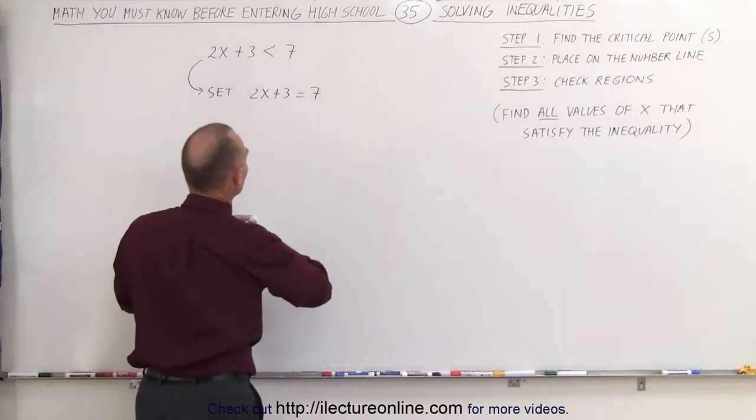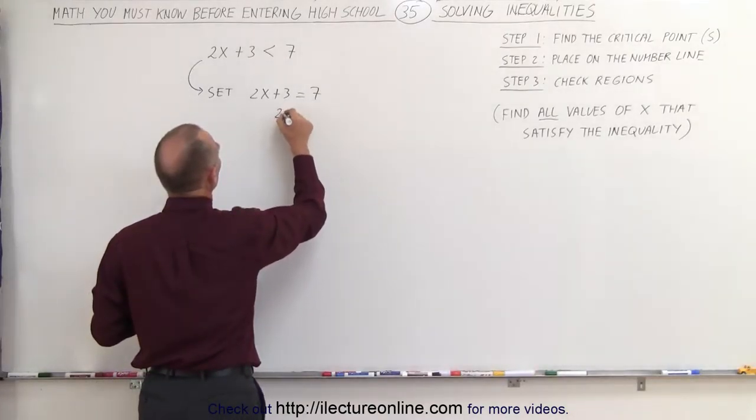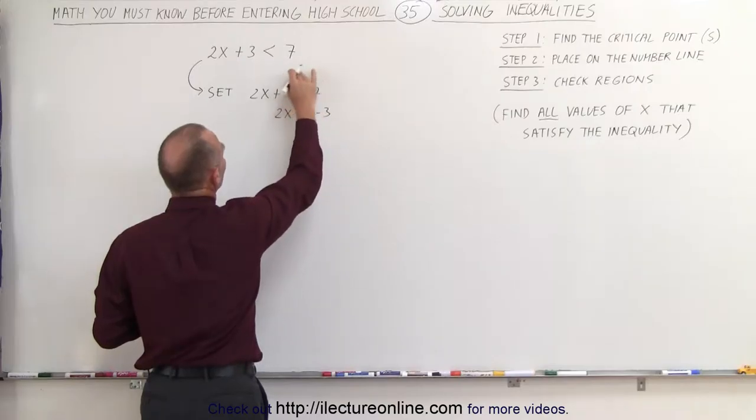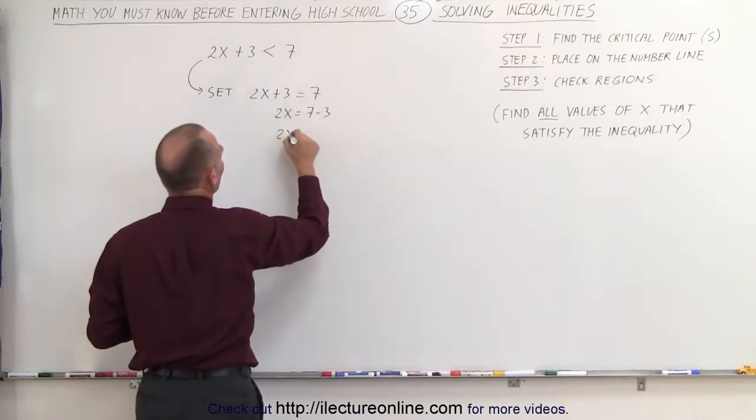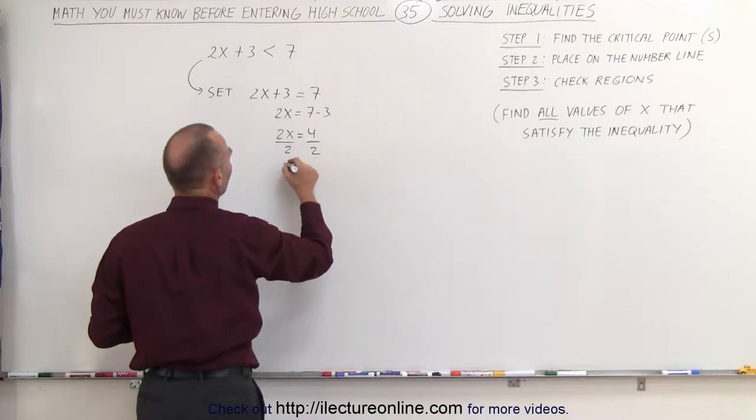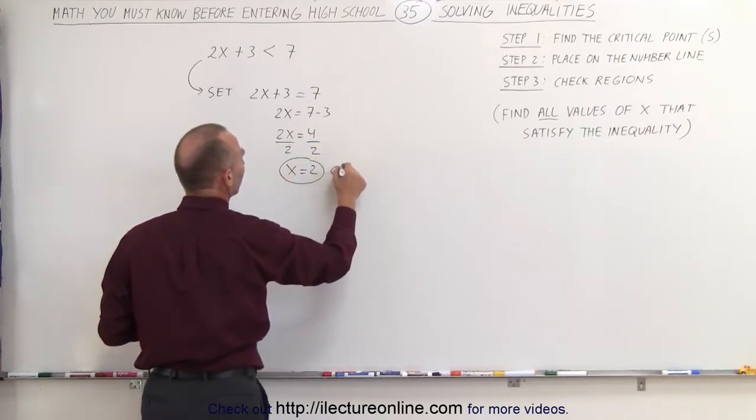So here we solve this equation. We end up with 2x equals 7 minus 3 by moving the 3 to the other side. 2x equals 4. Divide both sides by the coefficient and we get x equals 2. This is called the critical point.